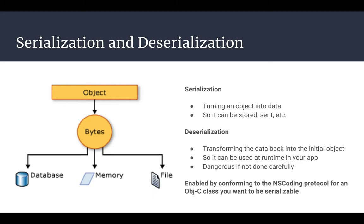Now we're going to move on to the concept of securely and safely serializing and deserializing data within your app. Serialization and deserialization are the process of saving and restoring code objects somewhere other than RAM, respectively. This can be used, for example, if you want to restore some state to run your app later or to pass information across process boundaries. Since the process of deserialization actually results in creating an object which can cause code to be run, you have to be extremely careful in terms of security to ensure an attacker can't execute code.